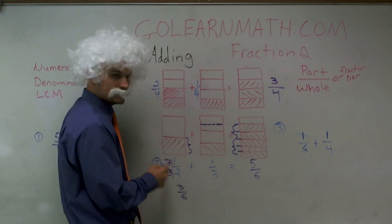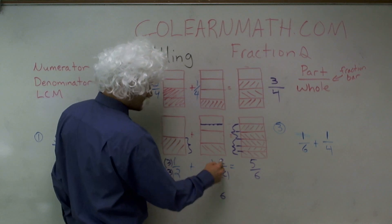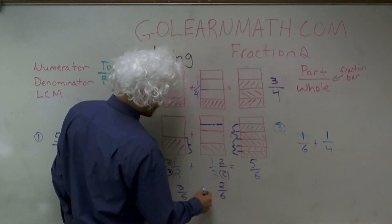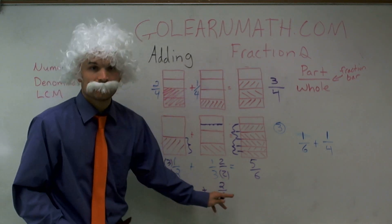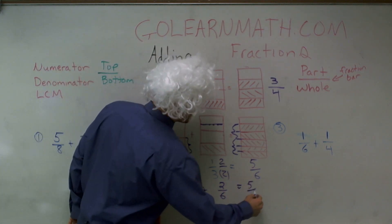And here I need to multiply by two over two because three times two is going to give me six, and one times two is going to give me two. So therefore now my denominators are the same and I can add them. So three plus two equals five sixths.